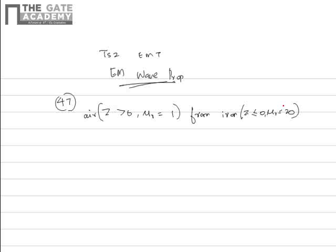It is also given that in air, the magnetic field intensity is given by H equals 10μ_x plus 15μ_y minus 3μ_z amperes per meter. This is for air's magnetic field.